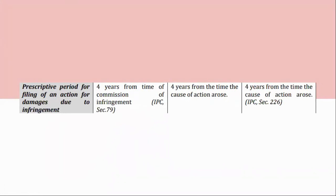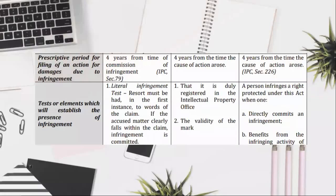Tests or elements which will establish the presence of infringement: (1) Literal infringement test — resort must be had, in the first instance, to the words of the claim. If the accused matter clearly falls within the claim, infringement is committed. For trademark infringement: (1) that it is duly registered in the intellectual property office; (2) the validity of the mark. A person infringes the right protected under this Act when: (A) directly commits an infringement; (B) benefits from the infringing activity of another.